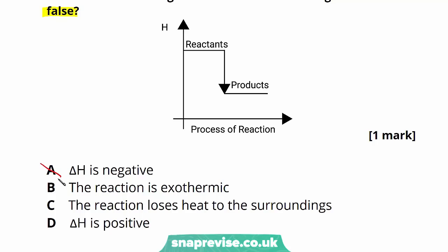Option B — the reaction is exothermic: since delta H is negative, the reaction is indeed exothermic, so B is true. Option C — the reaction loses heat to the surroundings: exothermic reactions do lose heat to the surroundings, so C is true. Option D — delta H is positive: this is the opposite of option A, which is correct, so D must be incorrect. Looking at our diagram, delta H is not positive, and therefore D is the correct answer — D is false.